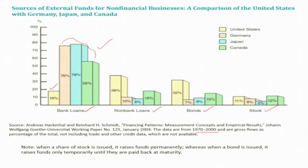Let us make some more observations. Stocks actually have a very small share — for the US, stocks account for only 11% of external funds, and for Japan only 5%. Even compared to bonds, which occupy 32% for the US, shares occupy only 11%. So what we normally think — that stocks are the major source of external funds — is not true. Firms actually rely on bonds, bank loans, and non-bank loans.